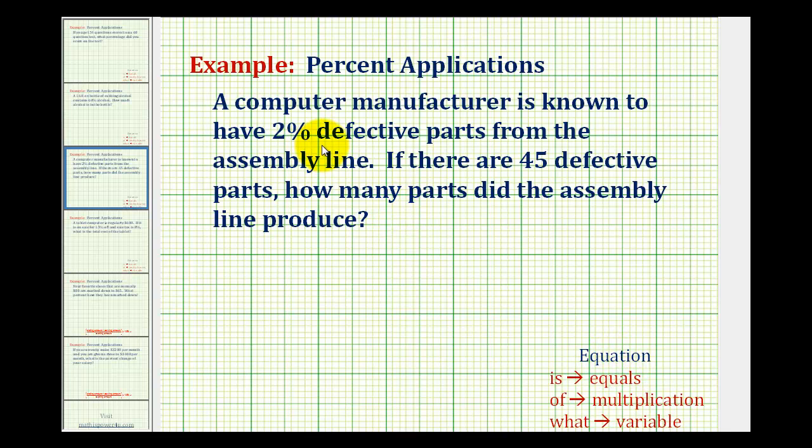So this manufacturer has 2% defective parts and it's known that there are 45 defective parts. We want to know how many parts they produced. So this 45 is the 2%. The basic question we want to answer is: 45 is 2% of what number? And the number would be the total number of parts produced.